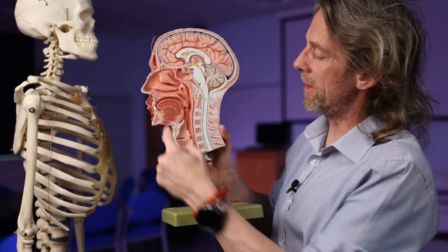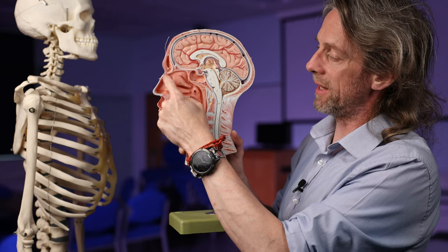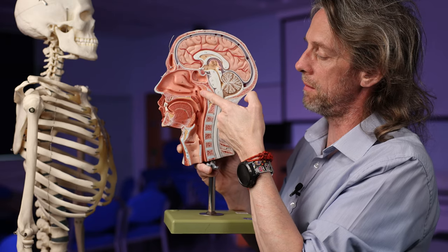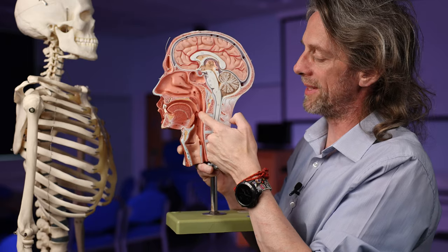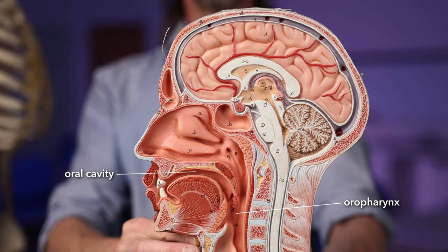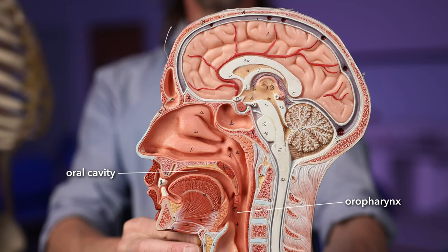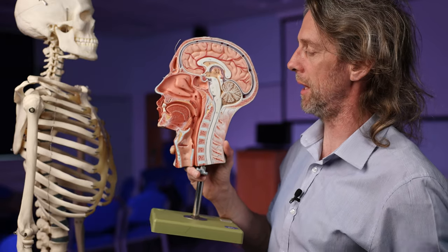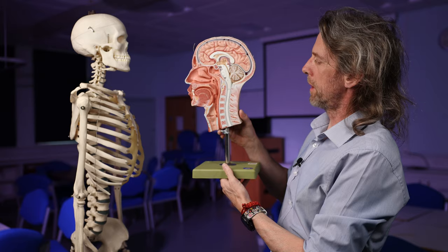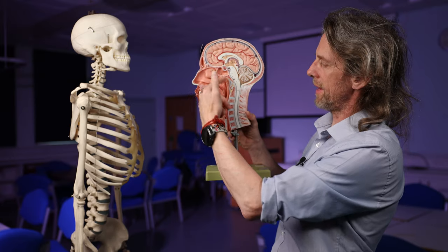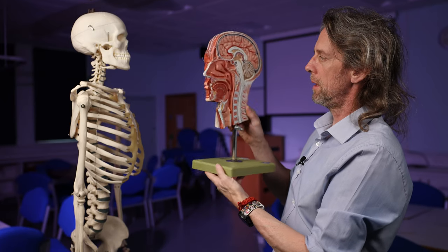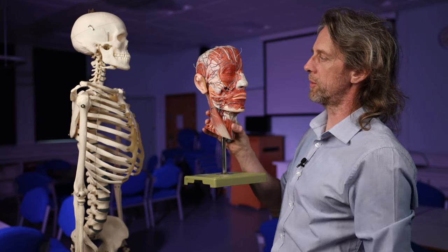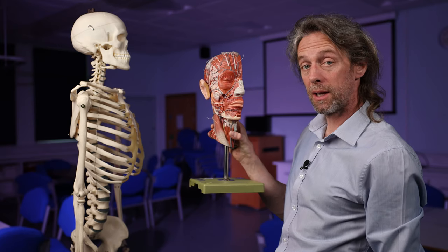Just like the nasal cavity had the nasopharynx posteriorly, the oral cavity has the oropharynx posteriorly. Down here is the larynx, but that's the neck, so that's out of bounds for today. That covers much of the face.